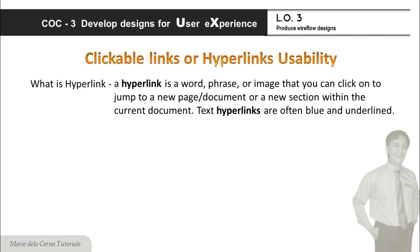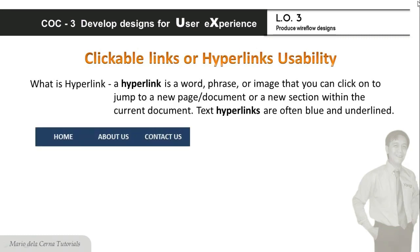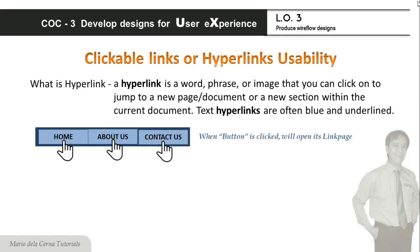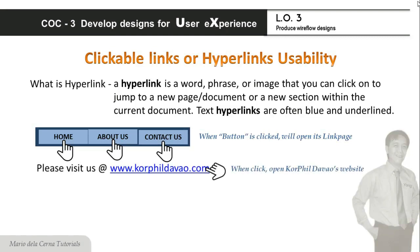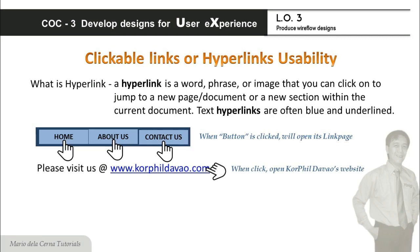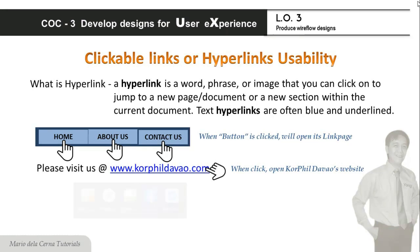Kung text hyperlink, kalimitan ay blue ang kulay nito at naka-underline. Sa unang sample natin, ang text ay may hover effect or attribute dahil nasa navigation bar. Sinundan ito ng simple lang na text hyperlink — yun ang sinasabing blue ang kulay at may underline. Ang sumunod naman ay icon image ng Facebook.